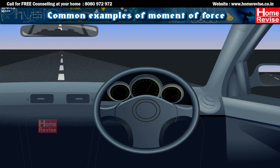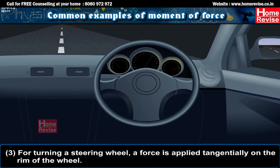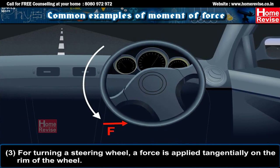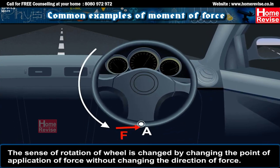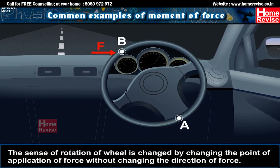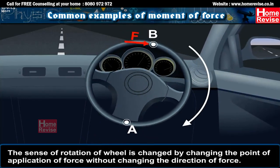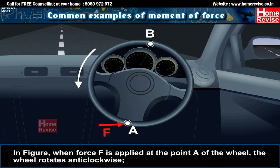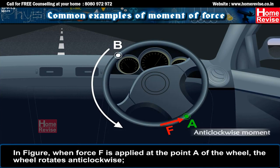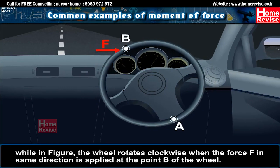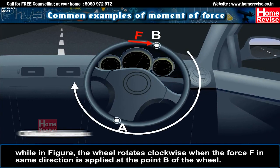3. For turning a steering wheel, a force is applied tangentially on the rim of the wheel. The sense of rotation of the wheel is changed by changing the point of application of force without changing the direction of force. When force F is applied at point A of the wheel, the wheel rotates anticlockwise, while the wheel rotates clockwise when the force F, in the same direction, is applied at point B of the wheel.